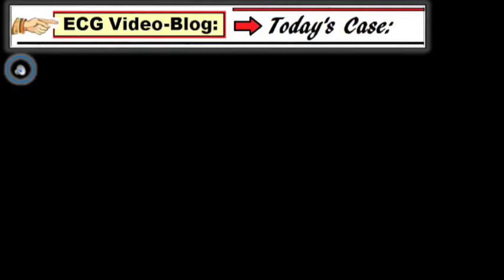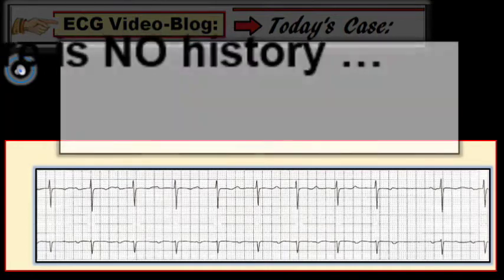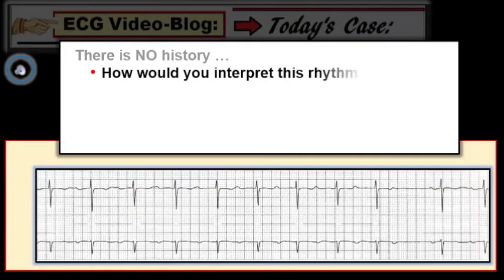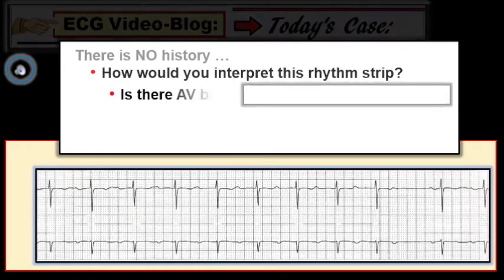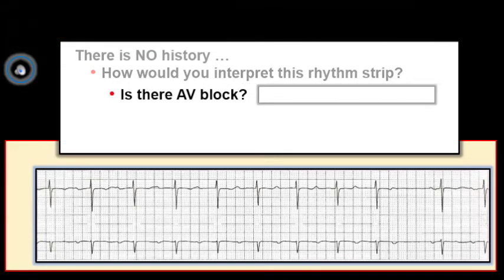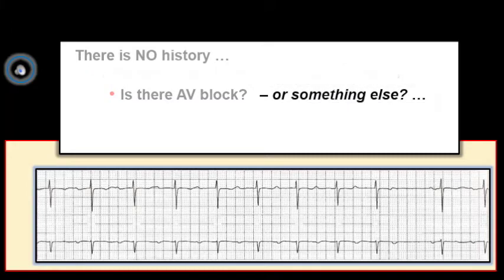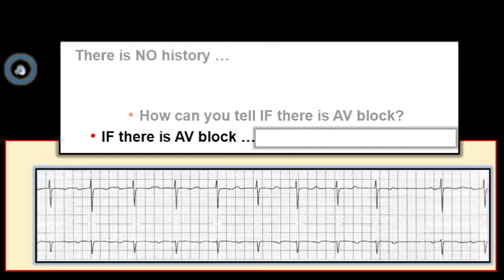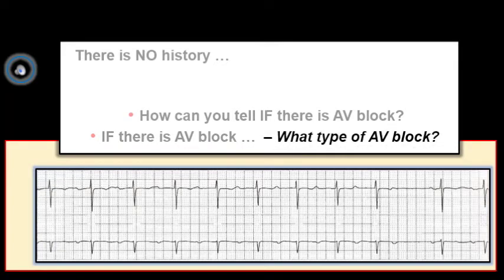Let's look at today's case, which was sent to me by Mike Fries, who does the Float Nurse ECG blog. Here's the rhythm strip, but there is no history. How would you interpret this rhythm? Additional questions to consider: Is there AV block or something else — for example, sick sinus syndrome or non-conducted PACs? How can we tell if there is AV block? And if there is AV block, what type is present?